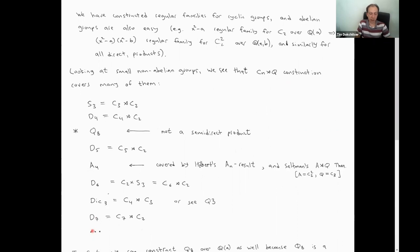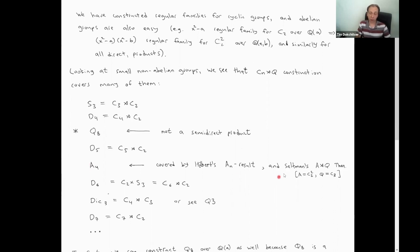If you look at small non-abelian groups — in this case, non-abelian groups of order less than 16 — all of them except two, except Q8 and A4, turn out to be semi-direct products, probably cyclic by abelian, as you can see in the list. So there are only two groups missing: A4 and Q8. A4 we already know — there's Hilbert's result on An. And you can also apply Saltman's theorem, because A4 is actually a special case of it: it has a normal subgroup C2², which is abelian, and the quotient by it is cyclic of order three. Again the two orders are coprime, so that's automatically a split extension. So the only missing group is Q8.